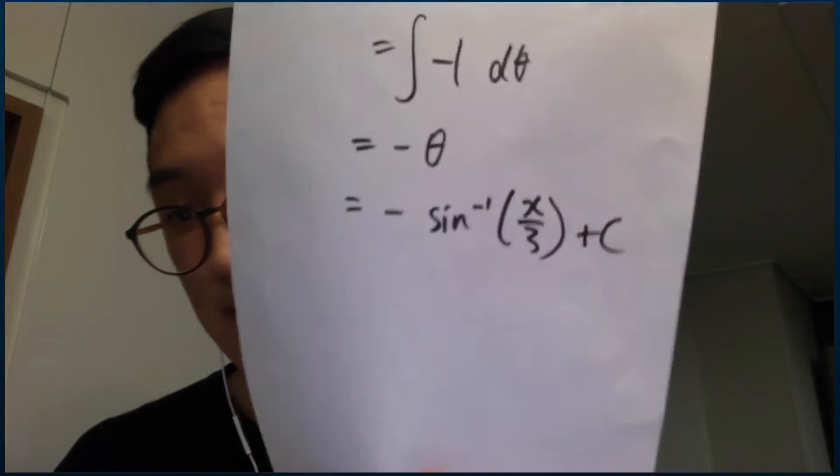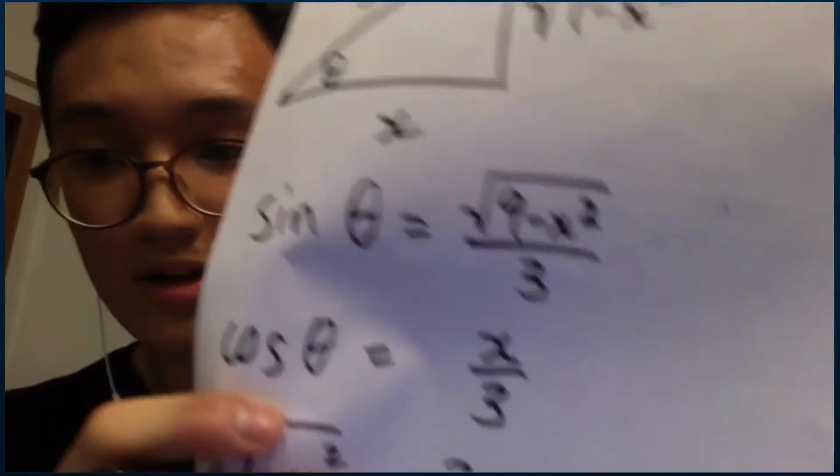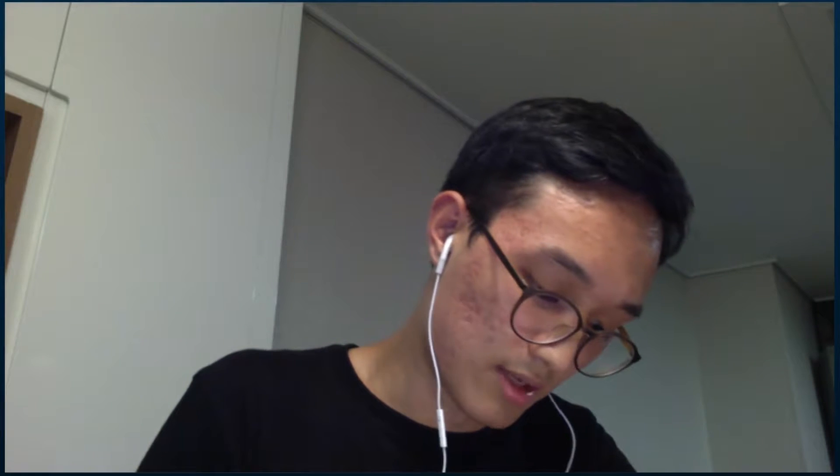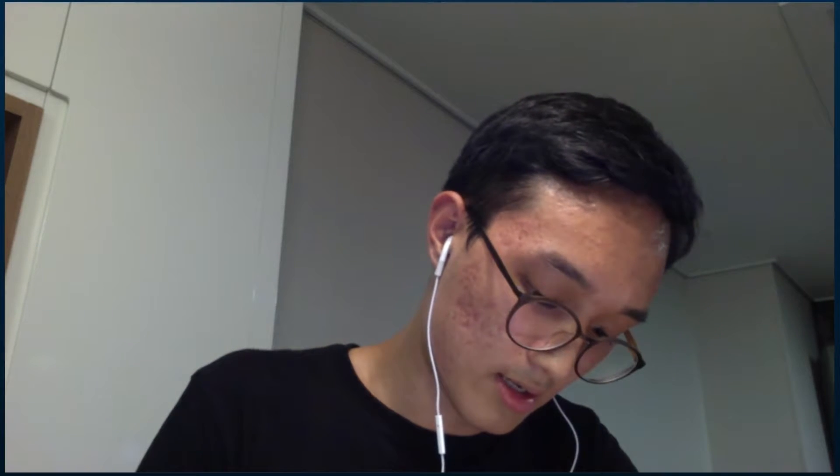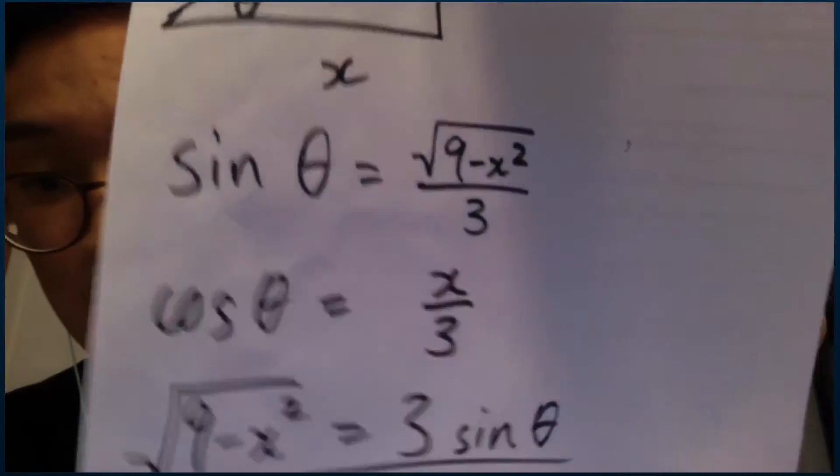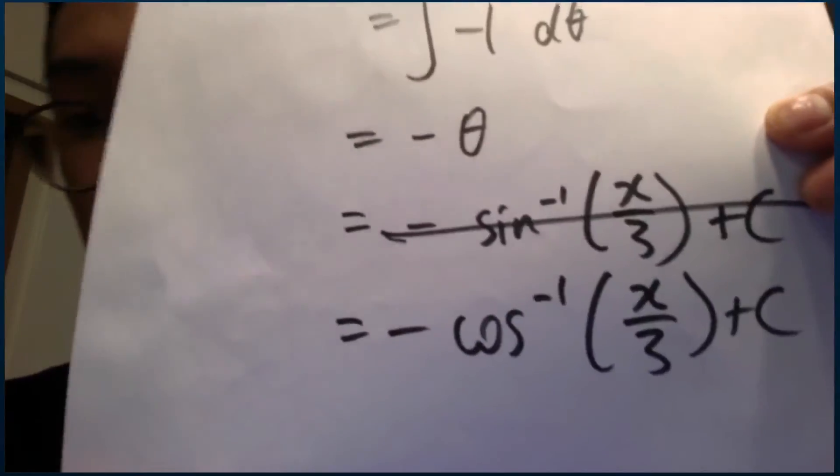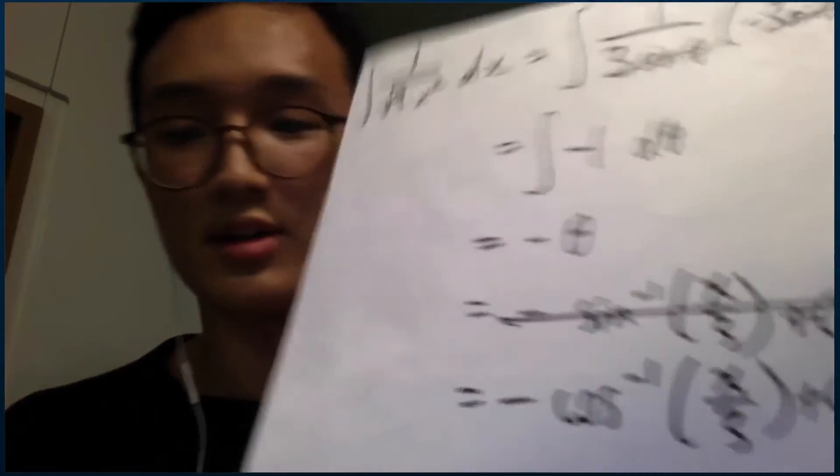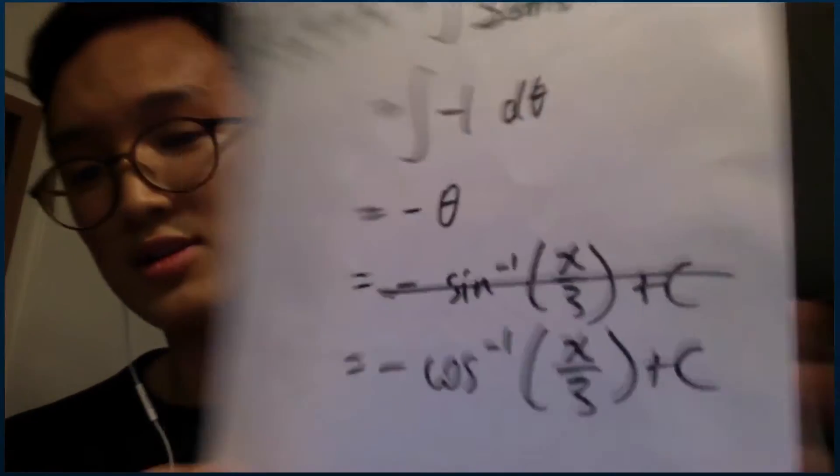And don't forget the plus C, so we'll get an answer that looks something like this. Because remember, we knew that it's going to equal negative cosine, arc cosine plus C, because here we found that cosine theta equals x over 3. So we know theta equals inverse cosine of x over 3. And additionally, don't forget the plus C because it's an indefinite integral.